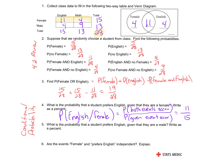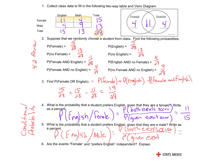I can also look at what is the probability that a student prefers English given that they're male. The only thing I'm going to change is my given condition — English given that they're male. How many males liked English? That goes in the numerator, and then out of how many males total. So it's going to be 4 out of 13.